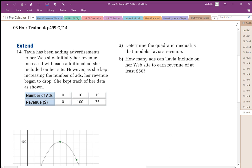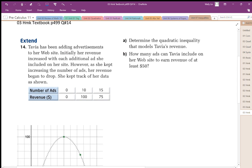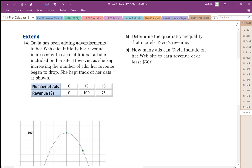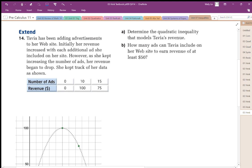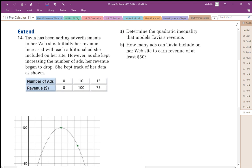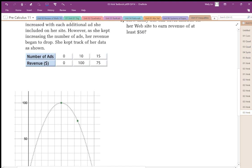Okay, so this is the law of diminishing returns. Part A says, determine the quadratic inequality that models Tavia's revenue. So what we want to do is use those three coordinates to find out the parabola that we're dealing with. So I've graphed it here. This is what it looks like.